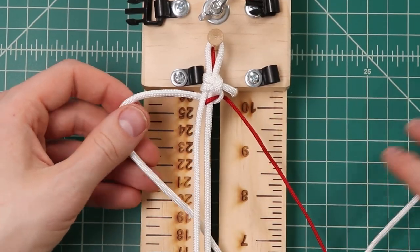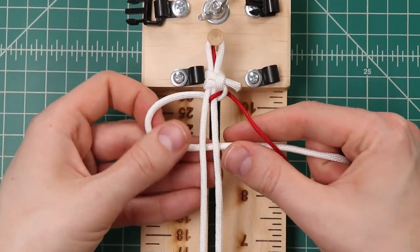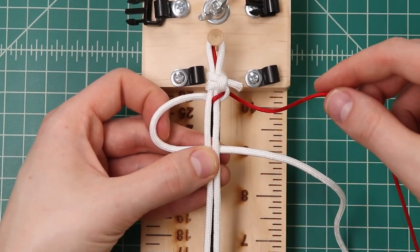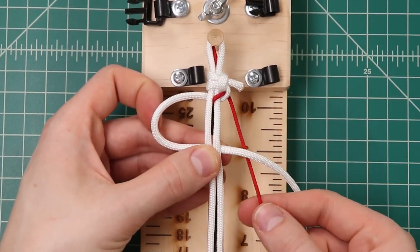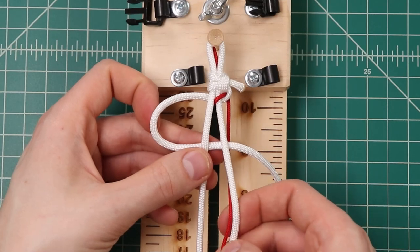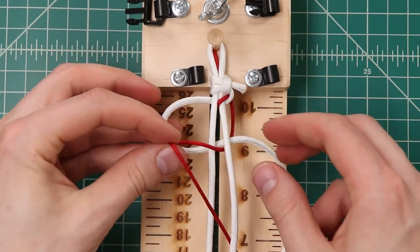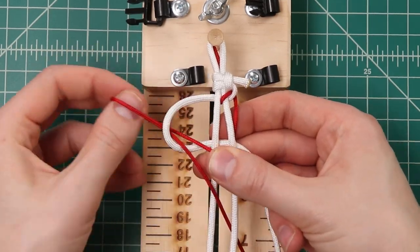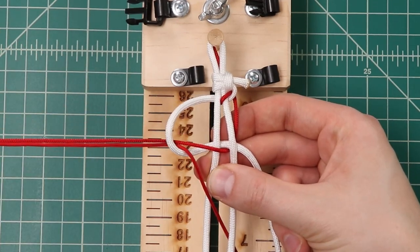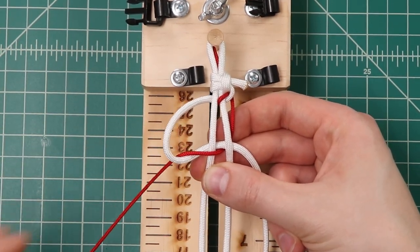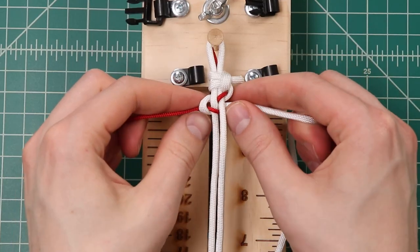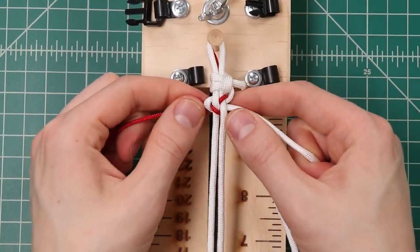Now we'll do the same thing but reversed. So that white cord we bring underneath the bottom, the red cord underneath that, to come up to the middle and down through that left loop. Tighten that down and it looks like that.